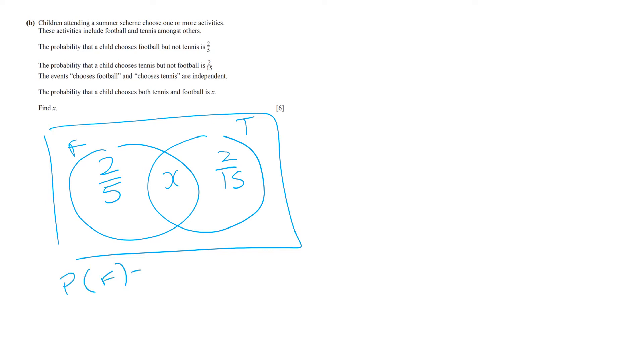Probability of F, therefore, is 2 fifths plus X. Probability of T is 2 fifteenths plus X. And we know that they're independent, so we know that F and T will be the probability of F multiplied by the probability of T.